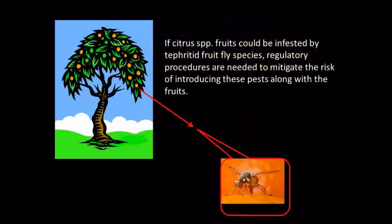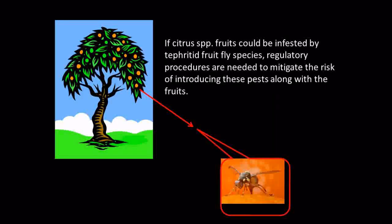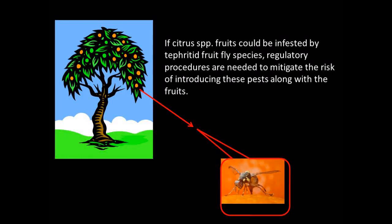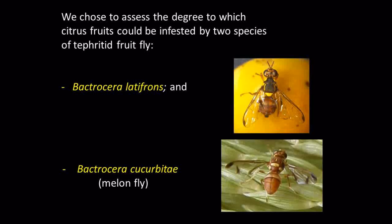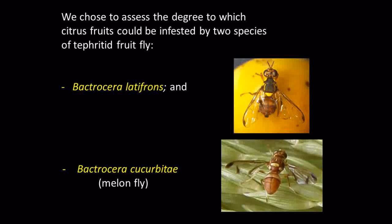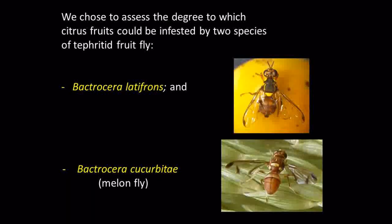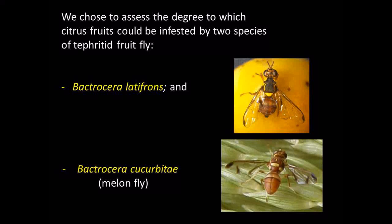Our paper deals with the host status of fruits for tephritid fruit flies. For fruits such as citrus species that are exported from countries where tephritid fruit flies are present, regulatory procedures are needed to mitigate the risk of introducing these pests into an importing country along with the fruits. Our research focused on assessing the degree to which citrus species could be infested by two tephritid fruit fly species: Bactrocera latifrons and Bactrocera cucurbitae, the latter commonly referred to as the melon fly.